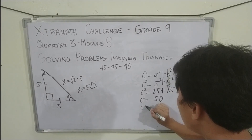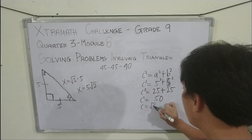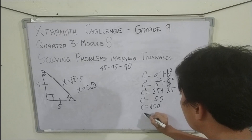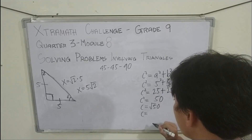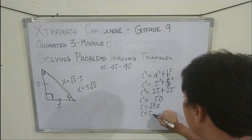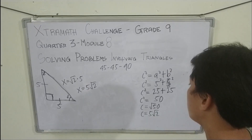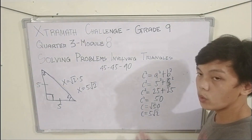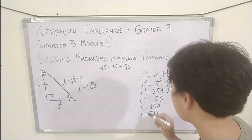So c is equal to the square root of 50, which gives us c equal to 5 square root of 2. We have proved our answer is correct.